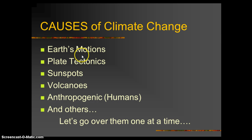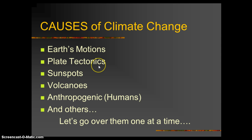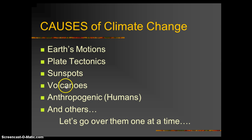The causes of climate change include: Earth's motions — certain planetary motions over thousands of years that cause cooling and warming; plate tectonics — our active planet's moving plates affect albedo and snow accumulation; sunspots and solar activity — 99.985% of our planet's energy comes from the sun, and sunspots indicate high solar activity, meaning more energy hitting Earth; and volcanoes — which can lead to either cooling or warming depending on the situation.